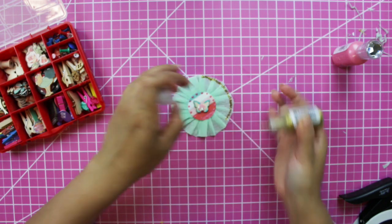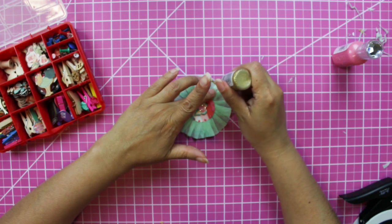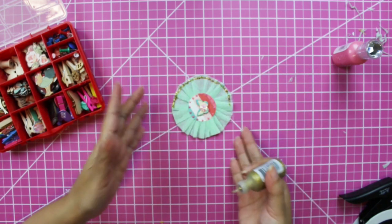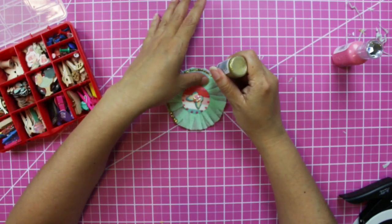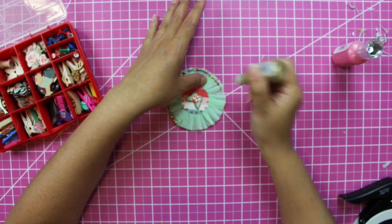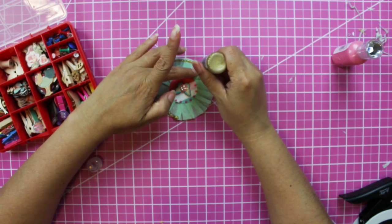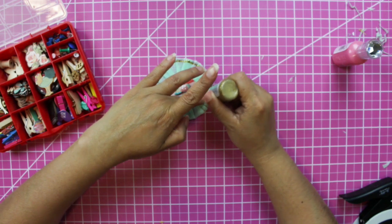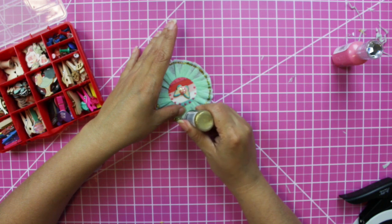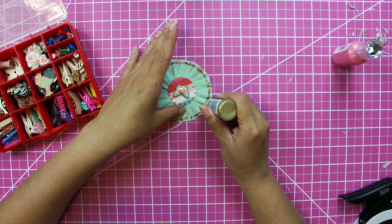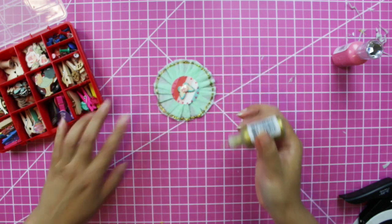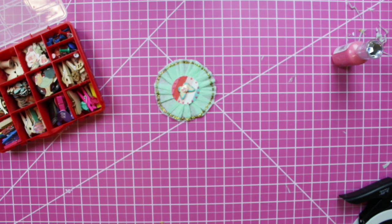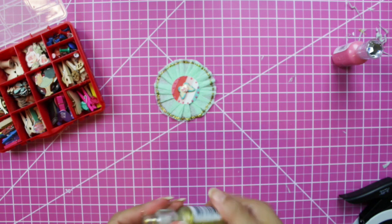You guys can also use glue and then dip the rosette in glitter. I'm not doing that. I'm just taking the easy route using stickles. I'm placing the stickles not on the edge of the paper but close to it. I like to see the borders, so that's the reason that I do that.